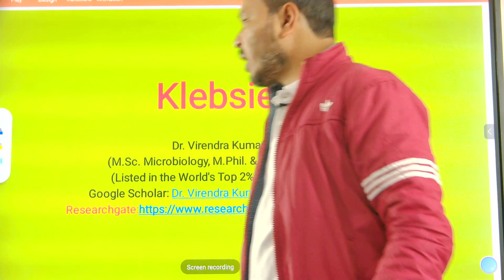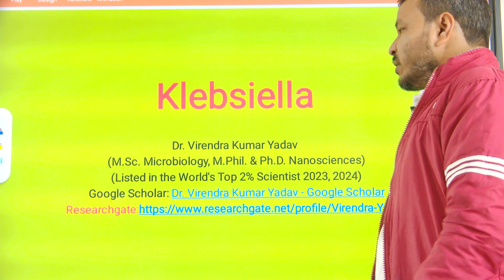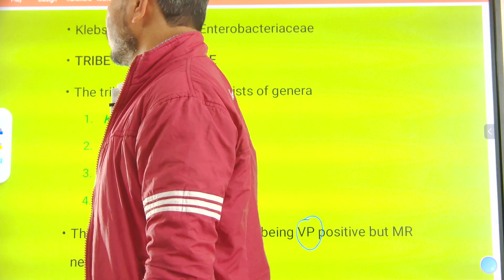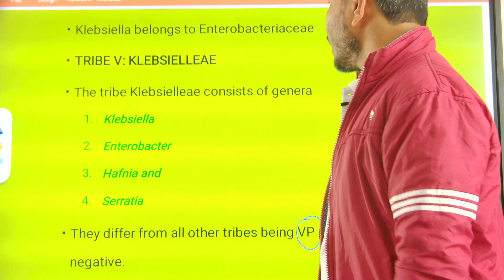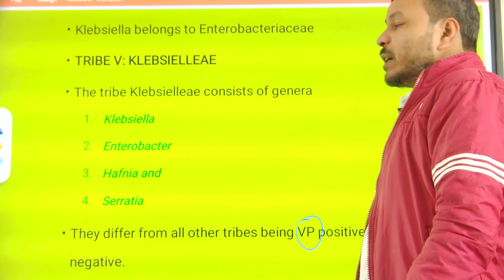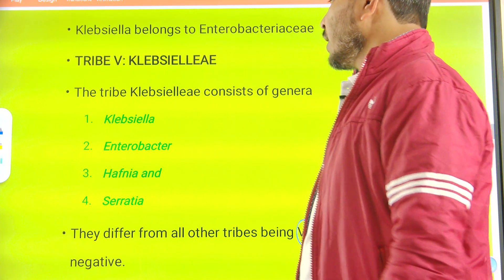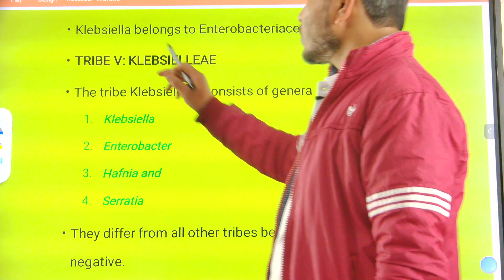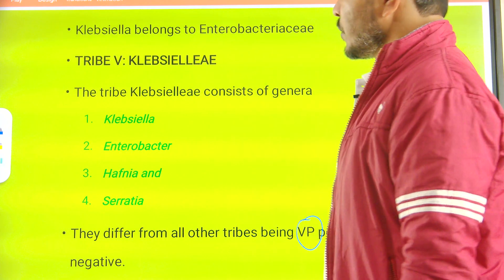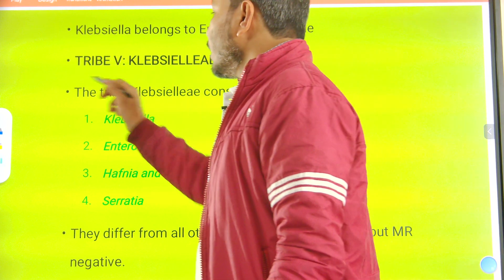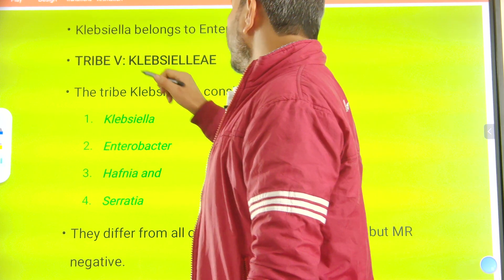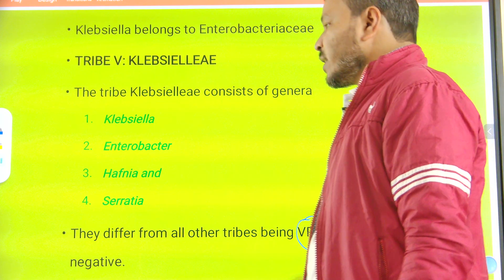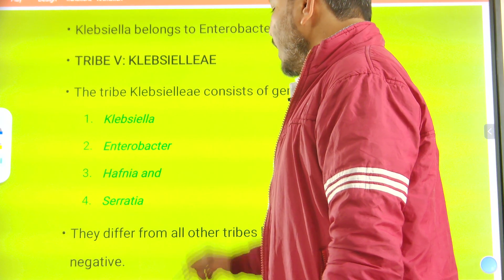Today we will talk about Klebsiella. It is a pathogenic bacteria which belongs to Enterobacteriaceae, a large group which includes several bacteria like E. coli, Serratia, and Klebsiella. Klebsiella belongs to Enterobacteriaceae and further it is from tribe 5, which is Klebsiella. The tribe Klebsiella consists of four genera: Klebsiella, Enterobacteriaceae, Hafnia, and Serratia.